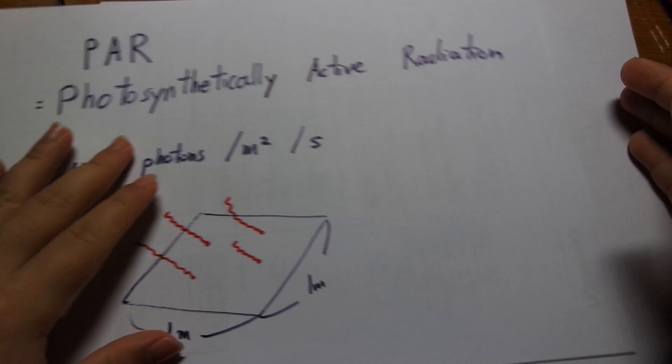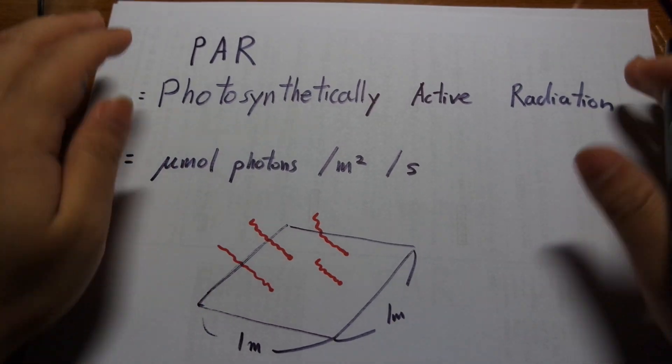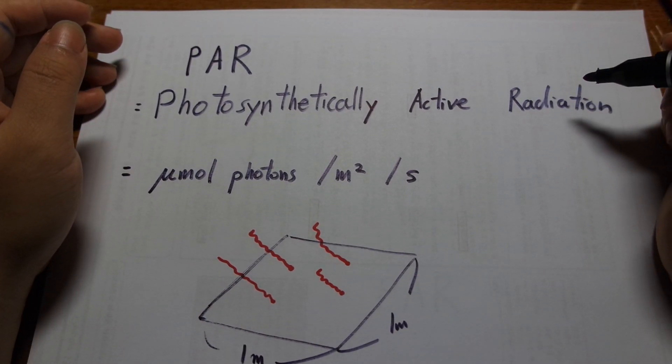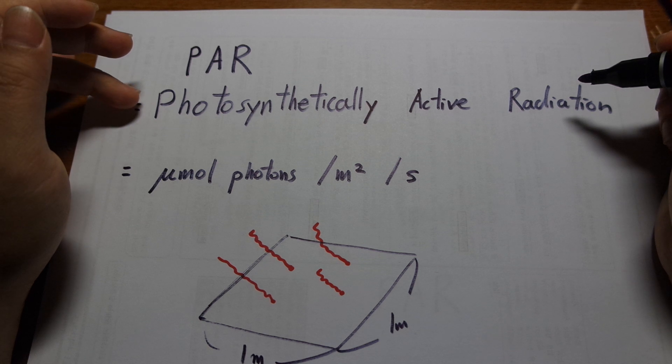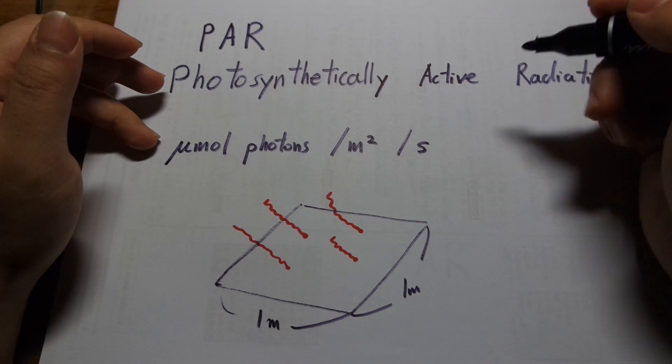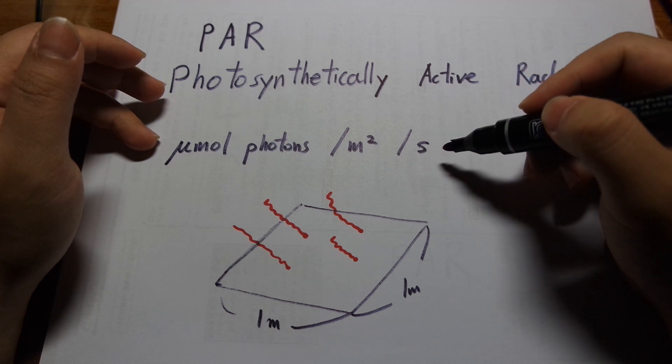I know a lot of you guys are going to get excited because everybody loves PAR. PAR is an abbreviation for photosynthetically active radiation, its unit is micromole photons per meter squared per second.